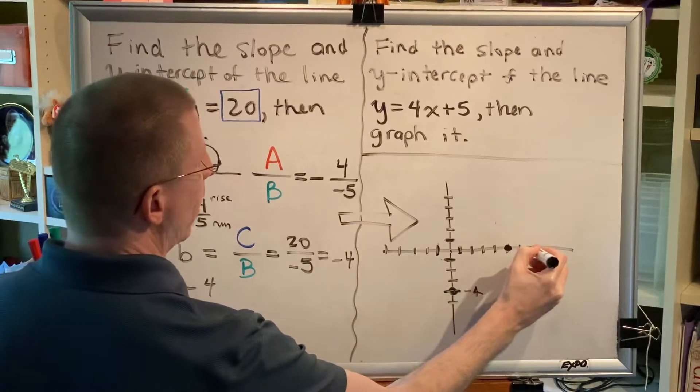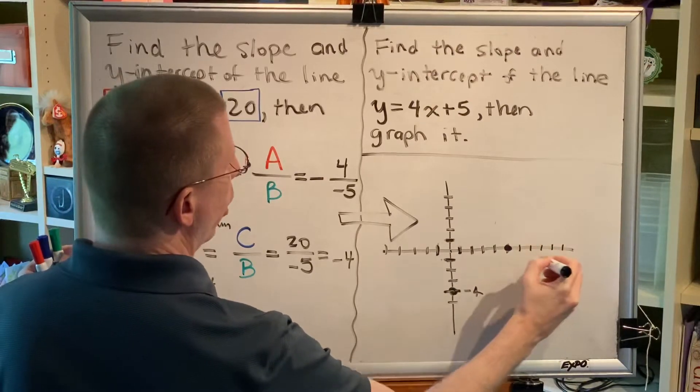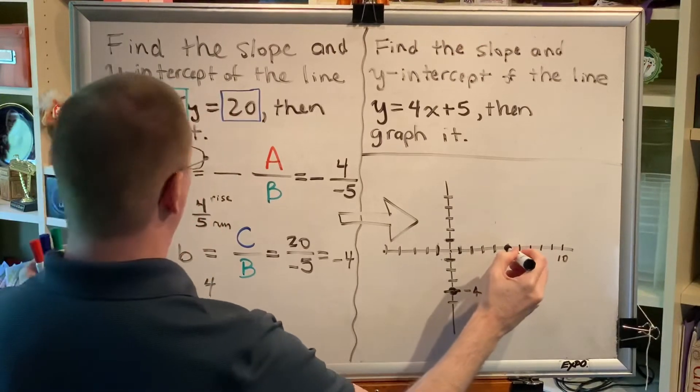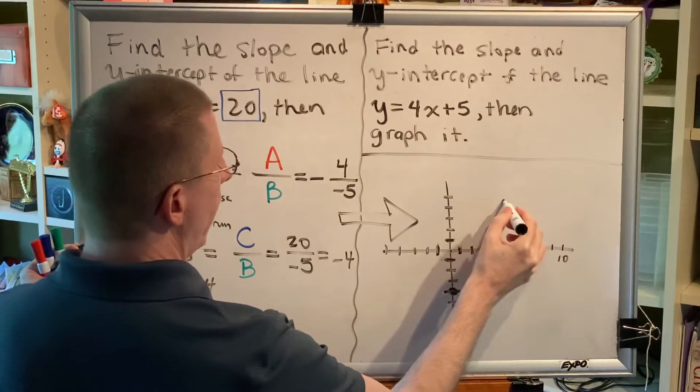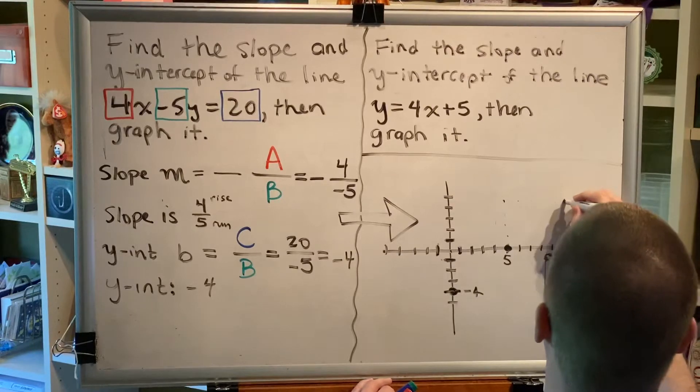You can do this as many times as you'd like, and you should do it until you run out of room on your graph grid. So, let's do it one more time. From this point, up 4: 1, 2, 3, 4, and 5 to the right. 1, 2, 3, 4, 5, and put a point.